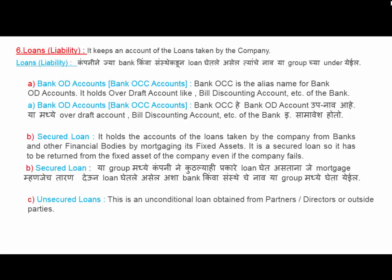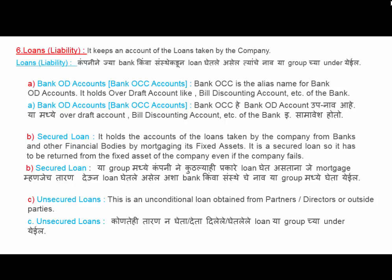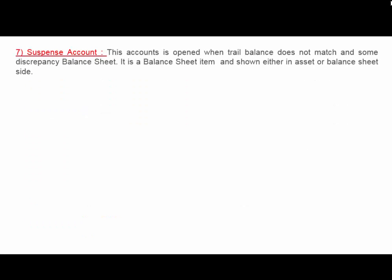Next is Unsecured Loan — this is an unconditional loan obtained from partners, directors, or outside parties. Suspense Account is opened when the trial balance does not match and there are discrepancies; it is a balance sheet item shown either on the asset or liability side.